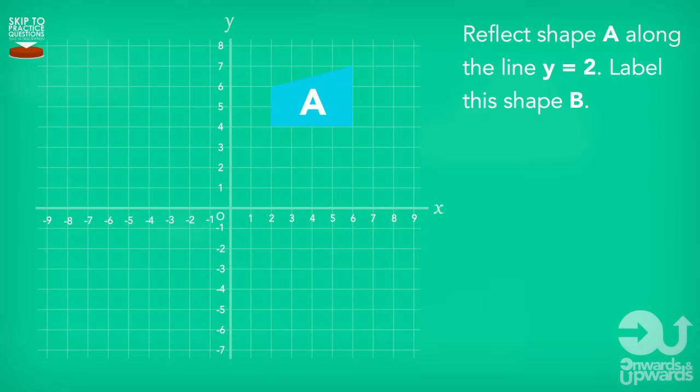A question we could be asked is, reflect shape A along the line Y equals 2, label this shape B.